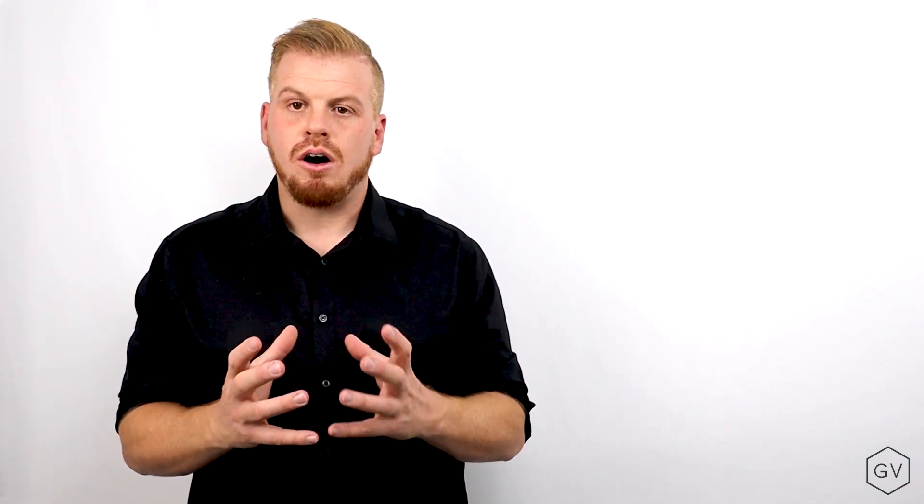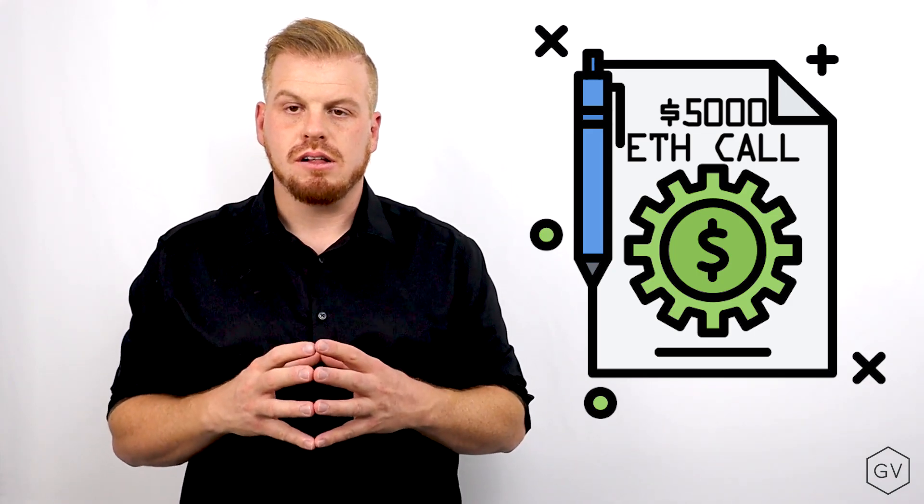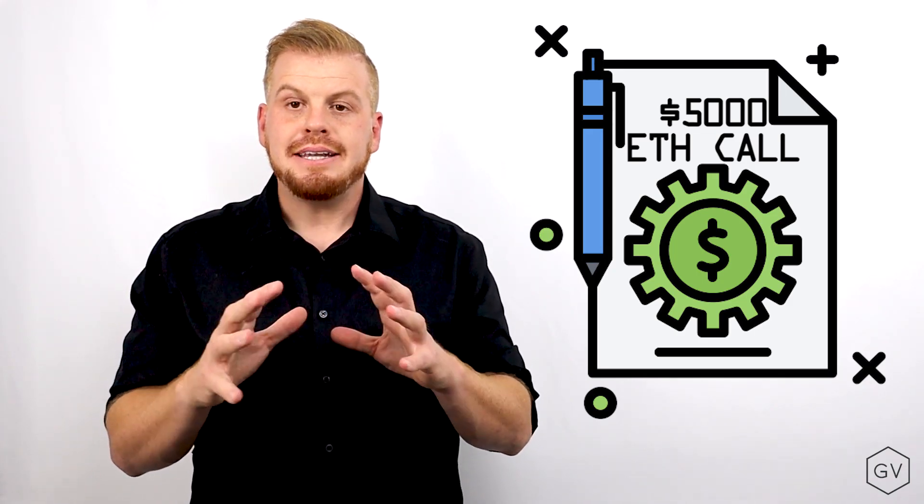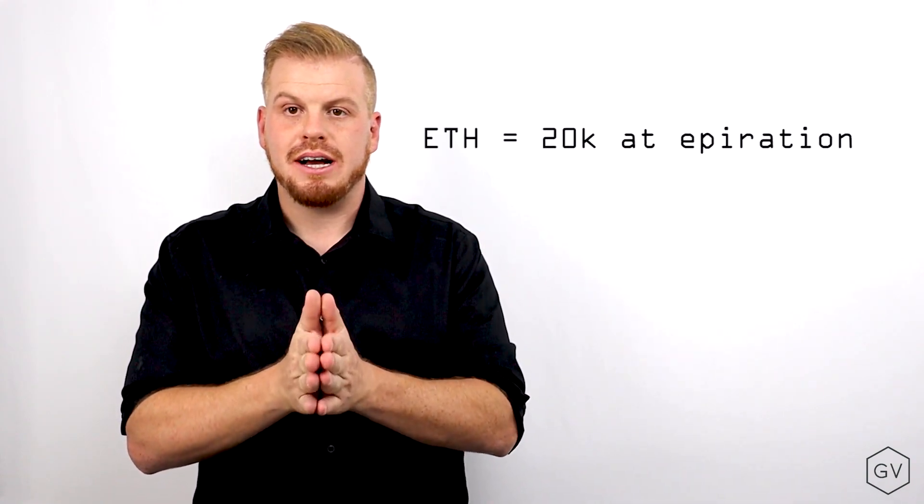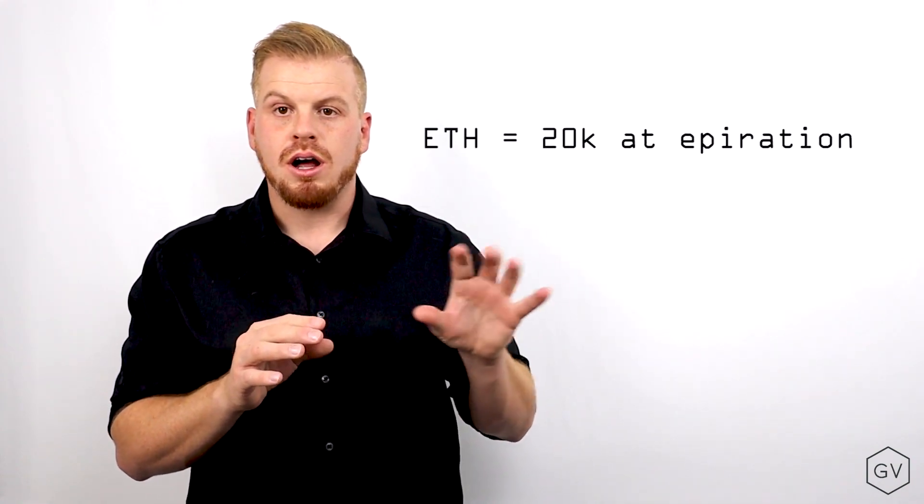Let's imagine an example where we minted an ETH call with a strike price of $5,000. At the expiration of this ETH call, let's say the underlying price is $20,000. The settlement bot will go out and fetch the value of $20,000 and input it into the settlement layer. This is the final price of ETH at expiration.